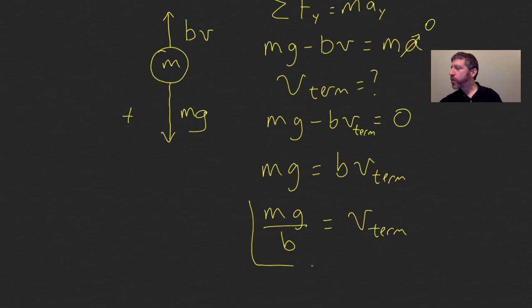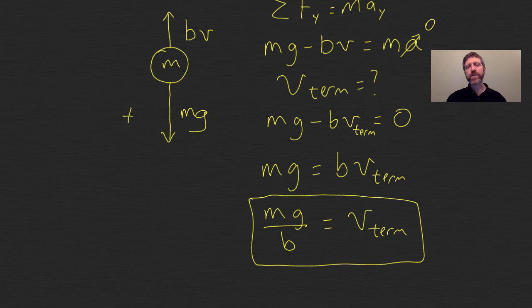So once the velocity reaches that, it will no longer accelerate. It will just stay at that velocity as it continues to fall. And terminal velocity for a skydiver might be something like 200 miles an hour. For a piece of paper, it might be 2 miles an hour. It depends on a bunch of different stuff. And again, we are assuming that the resistive force is proportional to the velocity to the first power.